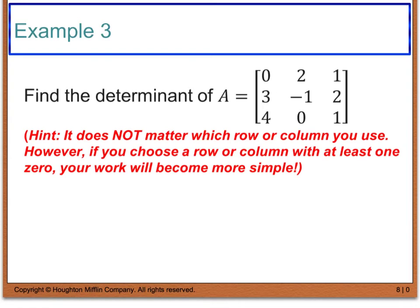Example 3 says to find the determinant of A. The hint is that it does not matter which row or column you choose. However, if you can find a row or column with at least one zero, that makes your work easier since multiplying by zero simplifies things. I'm going to pick row one, which has a zero in it, though you could have used row three or column two.